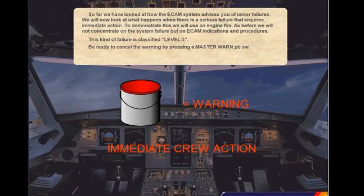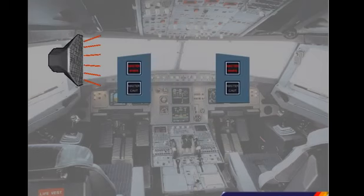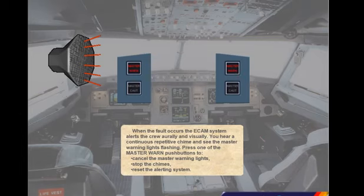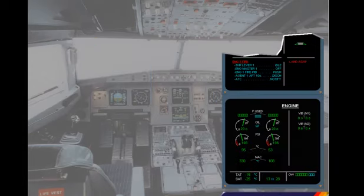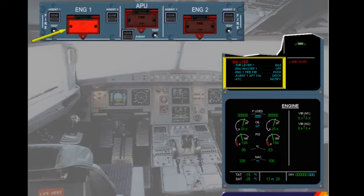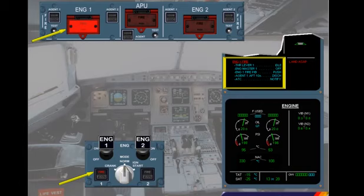Be ready to cancel the warning by pressing a master warning push button switch. Click on the forward arrow to initiate the failure. When the fault occurs, the ECAM system alerts the crew orally and visually. You hear a continuous repetitive chime and see the master warning lights flashing. Press one of the master warning push buttons to cancel the master warning lights, stop the chimes, and reset the alerting system. On the engine warning display, the red message Engine 1 Fire and the associated procedure are displayed. The red push button on the fire control panel and the red indication on the engine panel provide confirmation and identification of the affected engine.